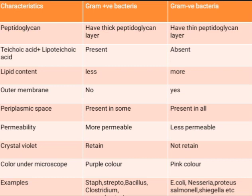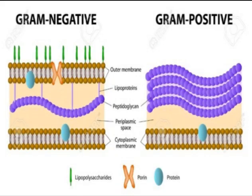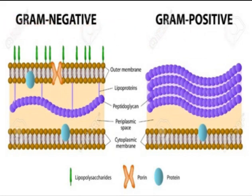The outer membrane is a very important feature. The outer membrane is not present in gram positive bacteria but it is present in gram negative bacteria. As you can see in this diagram, the gram negative cell wall has an outer membrane, while the gram positive cell wall has no outer membrane.